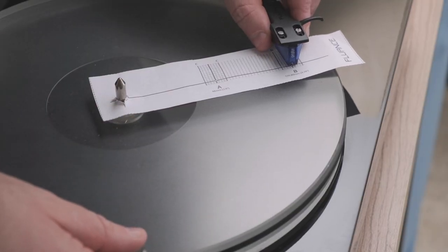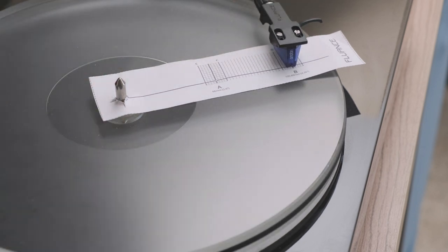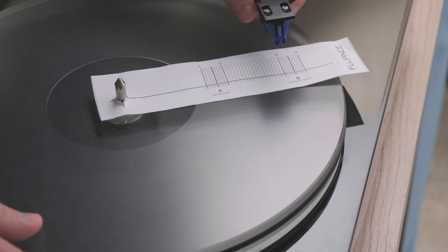If it isn't, align it and repeat the previous steps until the sides are parallel at both points.